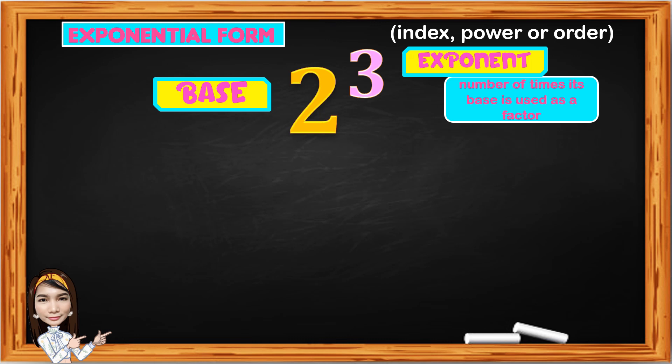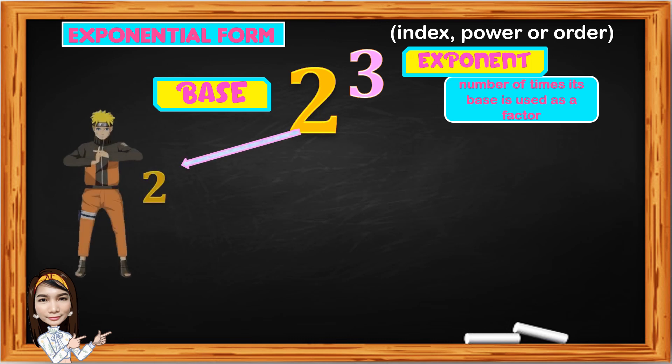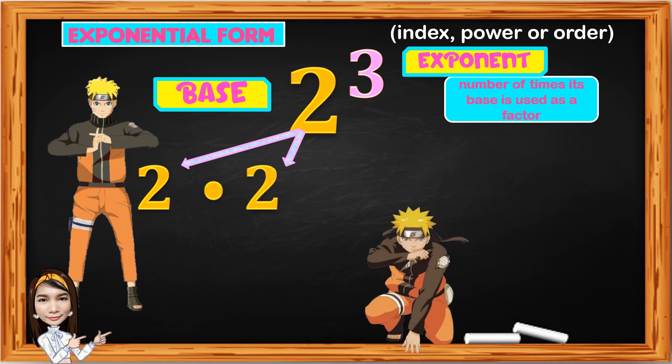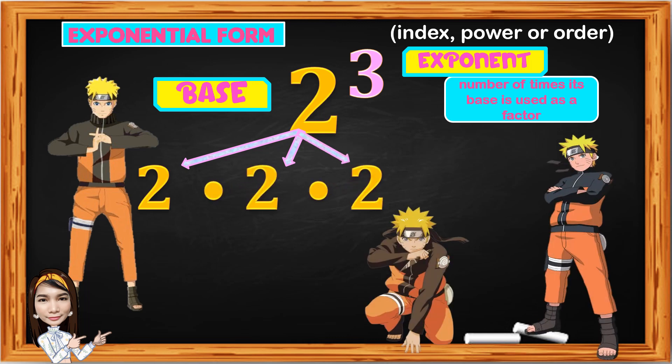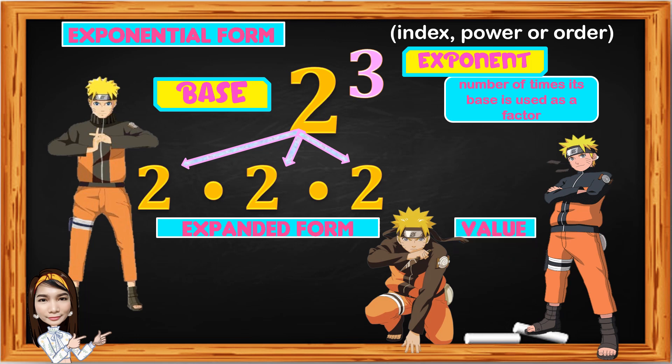Here we can use the Kage Bunshin technique. 2 times 2 times 2 is in the exponent form. If the exponent is 3, that means we multiply 2 three times by itself. To get the value of 2 cubed, just simply multiply 2 times 2, 4 times 2, we get 8. So the value of 2 cubed is 8.